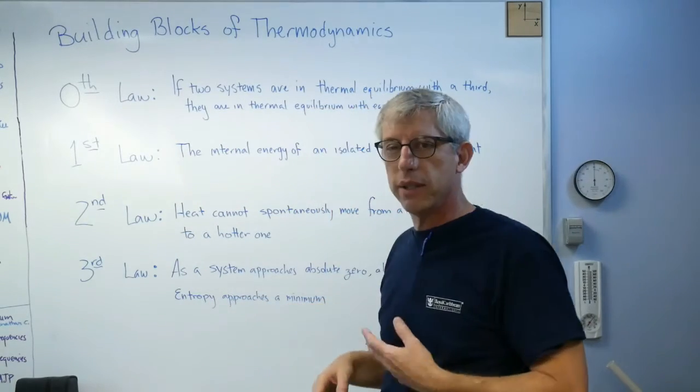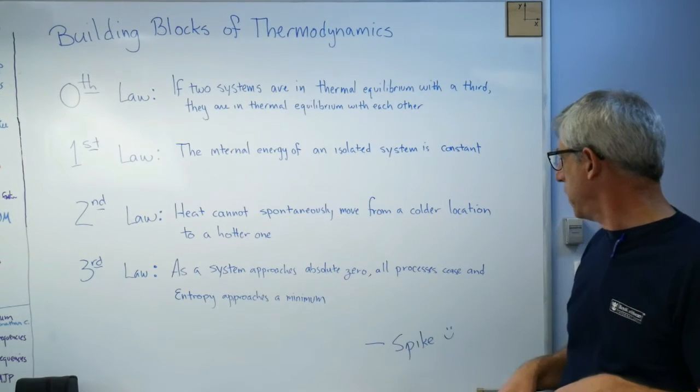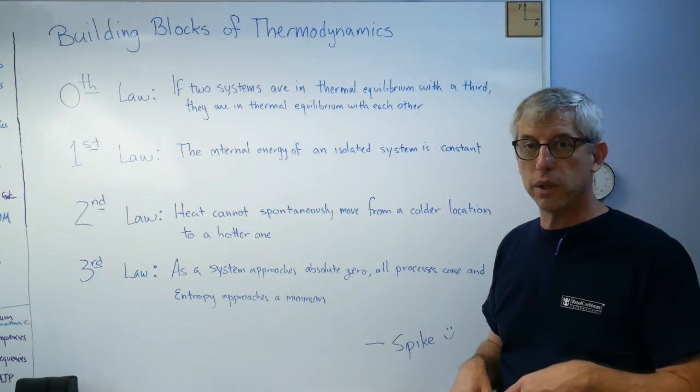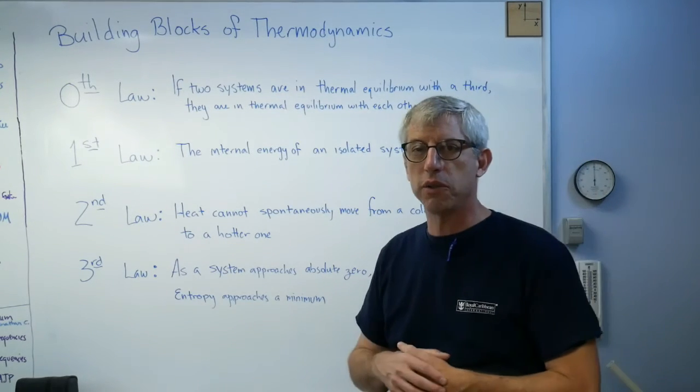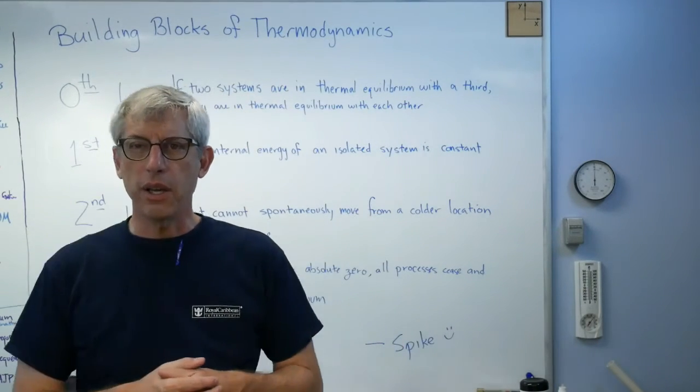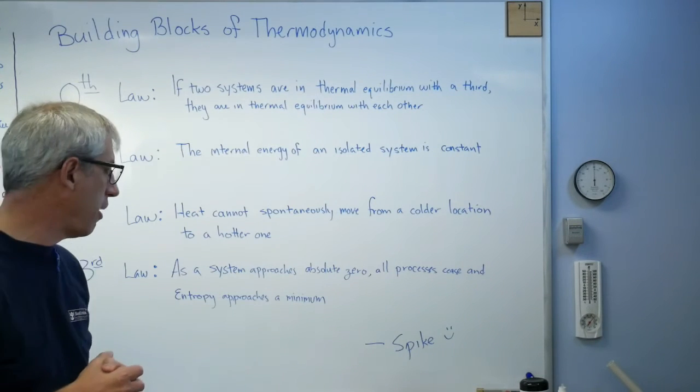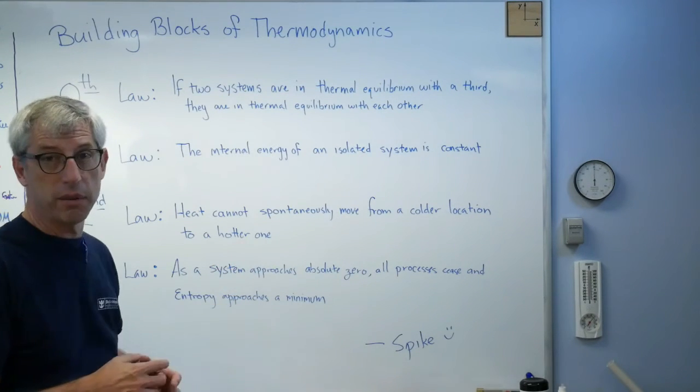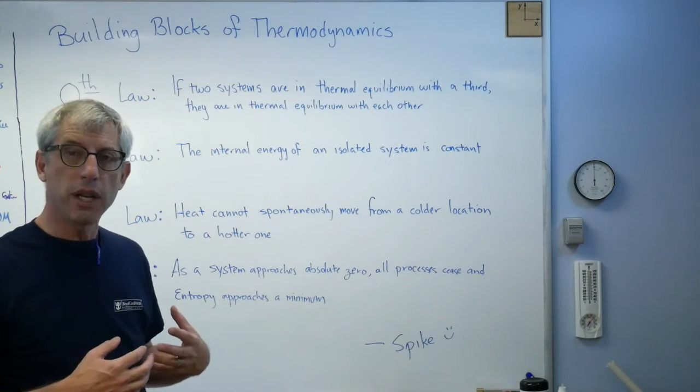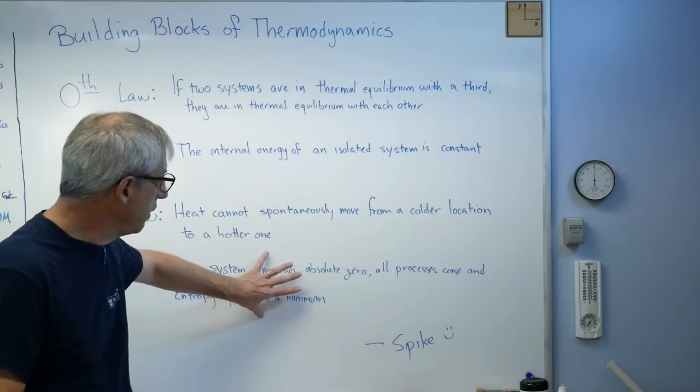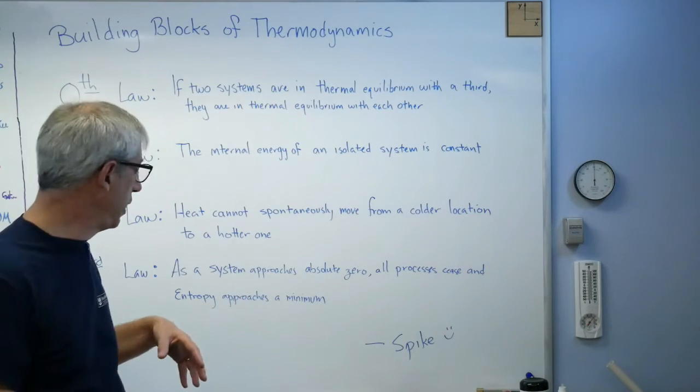The third law is another one of these bookkeeping kinds of laws. As a system approaches absolute zero, all processes cease and entropy approaches a minimum. It's true, there's no doubt that it's true. Now how often am I really going to use this? I'm an engineer. I don't get to pull things down to absolute zero very often. As somebody who's trying to build product and design products, this is another one of those bookkeeping laws. It's true, it's necessary for the development of thermodynamics, but I'm not going to use it very often.